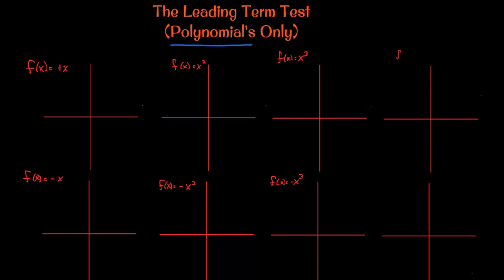Let's also try f(x) = x⁴ - x², and here we'll try f(x) = -(x⁴ - x²), so we've negated the entire function.